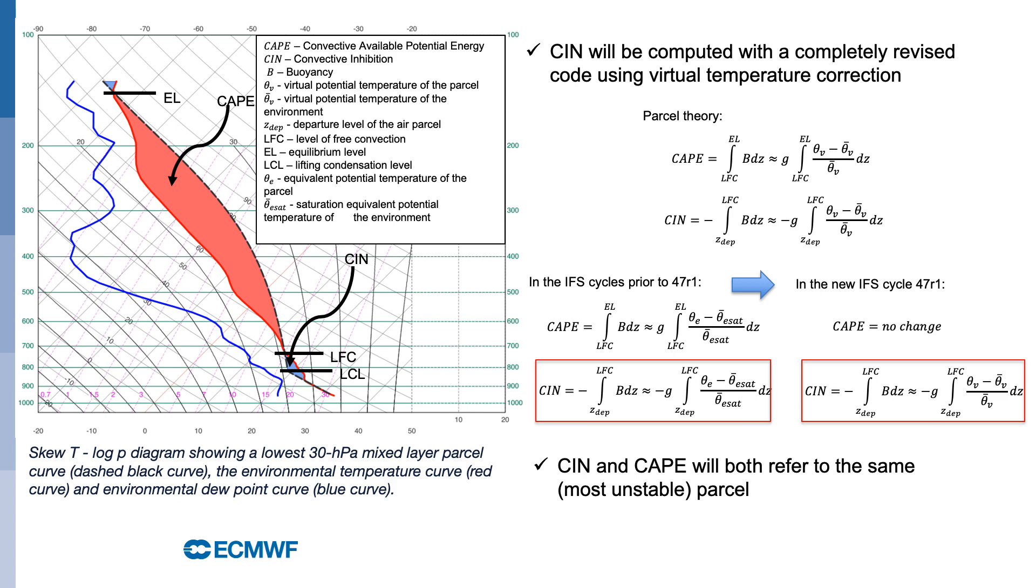in ECMWF model for computational efficiency, CAPE and CIN are approximated using equivalent potential temperatures.